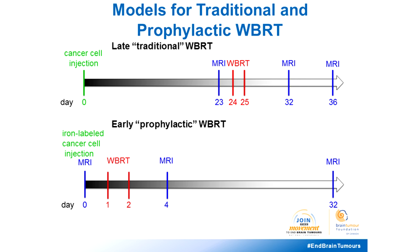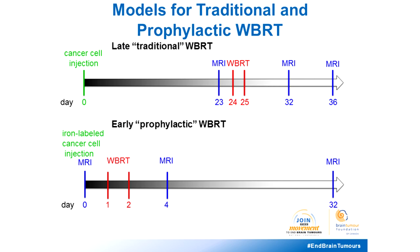In London, prophylactic WBRT is performed in patients with small cell lung carcinoma and is being considered for high-risk metastatic breast cancer patients — those HER2-positive patients. Our lab models for traditional and prophylactic WBRT are as follows: for late WBRT, we inject cancer cells on day zero, wait 23 days until tumors are visible, do MRI, and if tumors are present we apply radiation on the next two consecutive days, then follow up on days 32 and 36. For early or prophylactic WBRT, we iron-label the cells, inject and image on day zero, do radiotherapy on days one and two, then follow up on day four and at the endpoint.